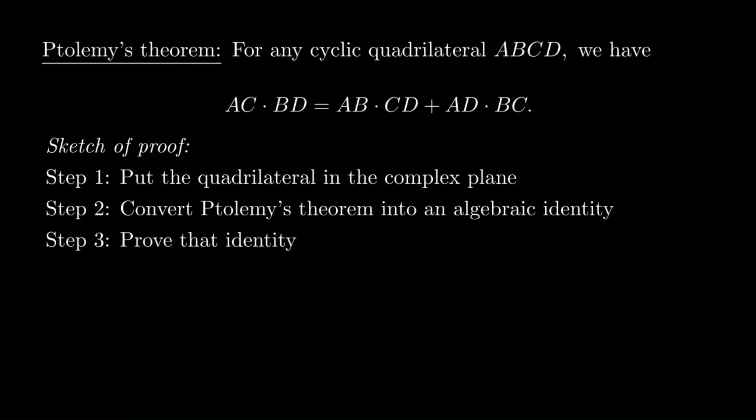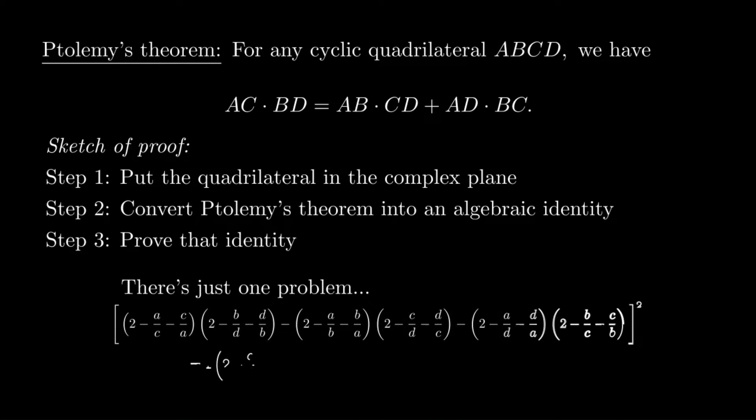That's easier said than done, though, because the identity we have to prove is a horrible, horrible mess. It takes up quite a bit of space if we actually write it all out, and expanding it would be a bit of a nightmare. Fortunately, there are some shortcuts for proving this. We don't actually have to expand it all out and check it.